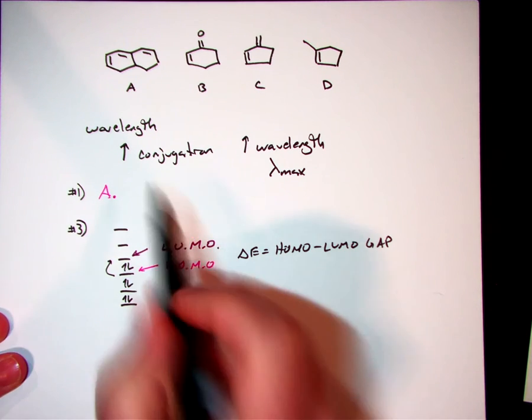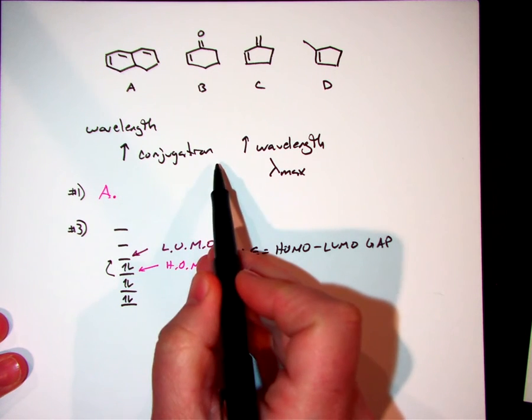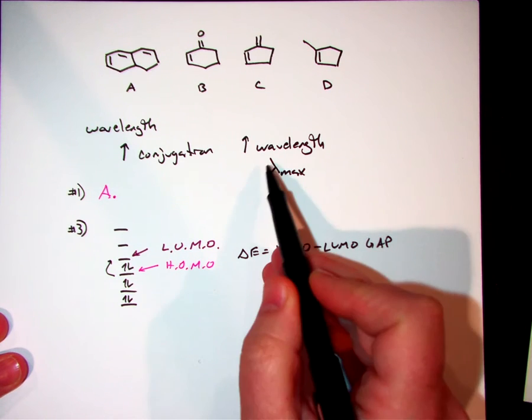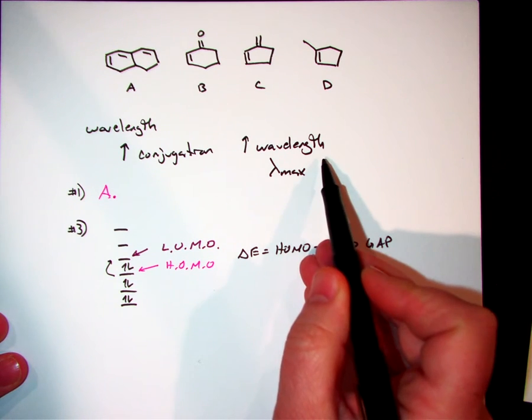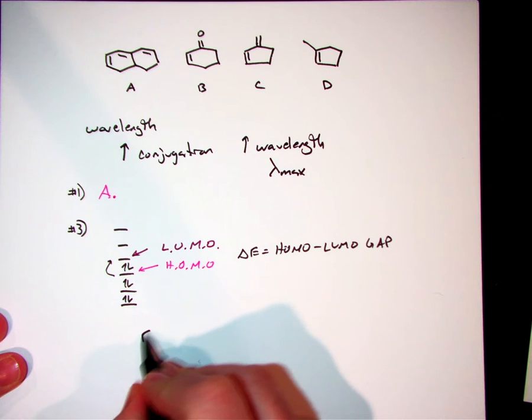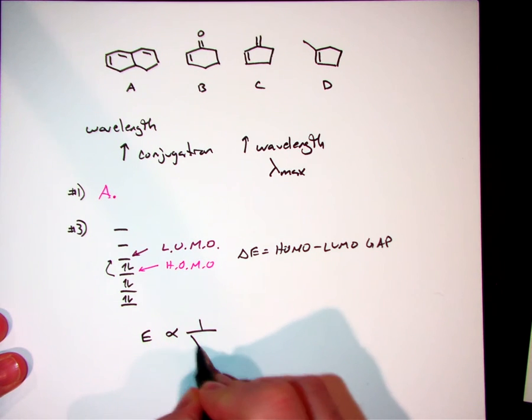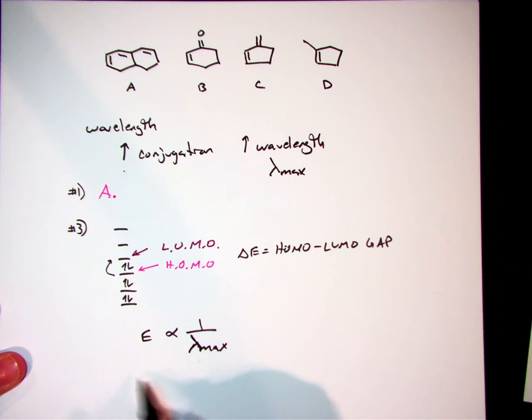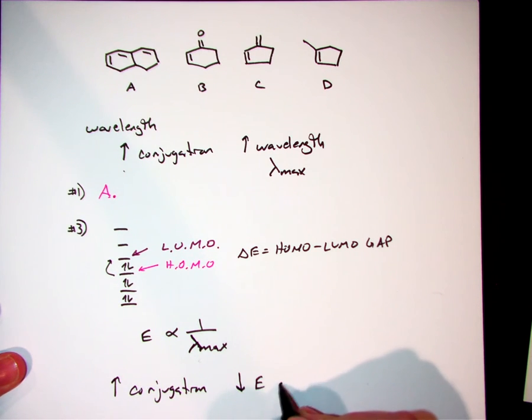So how does that work? We just talked about how if we increase the conjugation, we're increasing the lambda max that we experience. Now remember, a longer wavelength is actually a lower energy. The energy of absorption is proportional to the inverse of our lambda max. So to follow up on this concept with our HOMO-LUMO gap, that increase in conjugation leads to a decrease in our energy of absorption or that HOMO-LUMO gap energy.